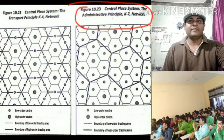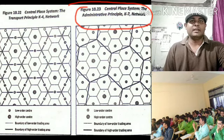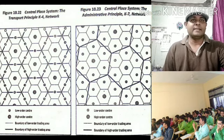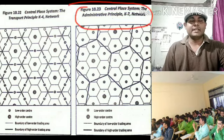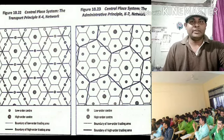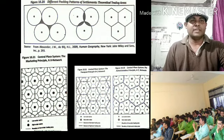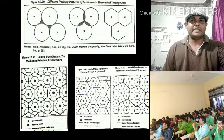In the central place system, there is the K=4 network under the transportation principle, the K=7 network under the administrative principle, and the K=3 network under the marketing principle. This is an empirical model which explains statistically the spatial arrangement of settlements, services, and goods.